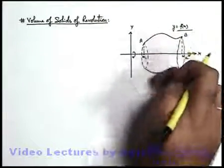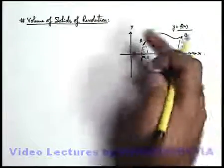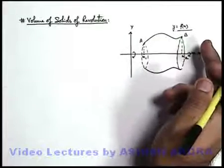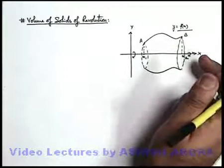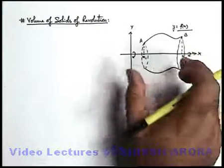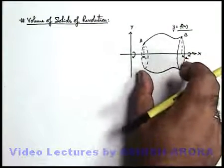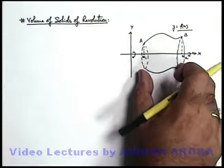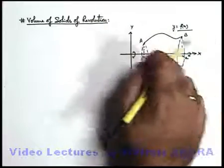Say we are required to find the volume of this solid of revolution. This is quite easy to calculate. As we have studied, to evaluate the volume of any given solid object we need to consider an element, integrating which we can get the volume of the whole solid.